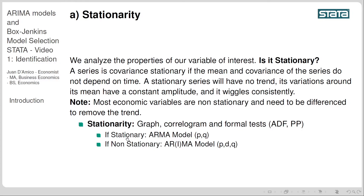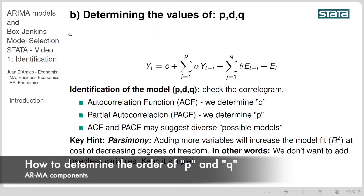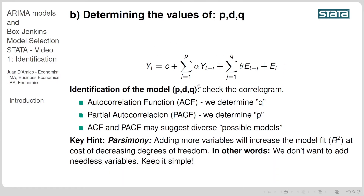Moving back to our slides — we have confirmed with stationarity tests that our variable was non-stationary in levels, but stationary in first differences, so we will be working with an ARIMA model. Now it's time to determine the values of P and Q. In the formal ARIMA representation, Y is explained by a constant, the autoregressive component of order P, the moving average component of order Q, and an error term. The autocorrelation function (ACF) determines Q, while the partial autocorrelation function (PACF) determines P.